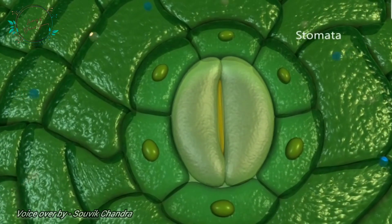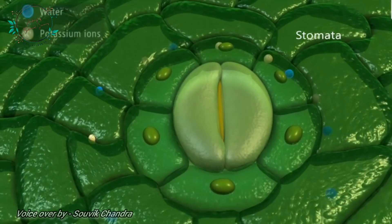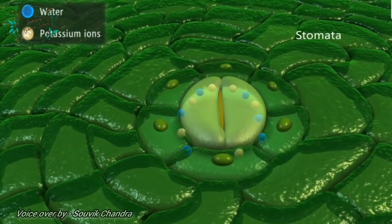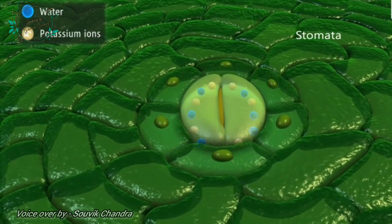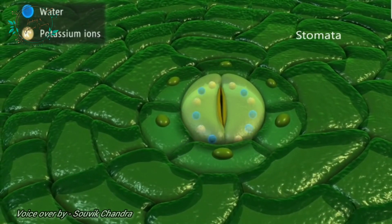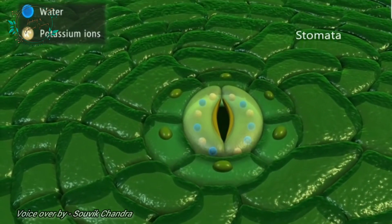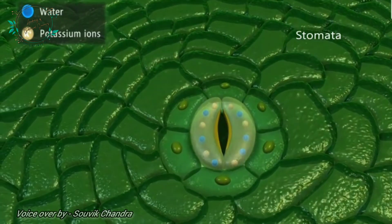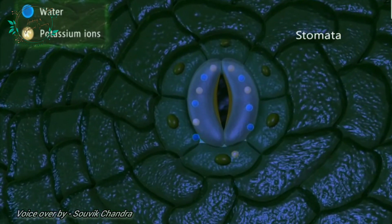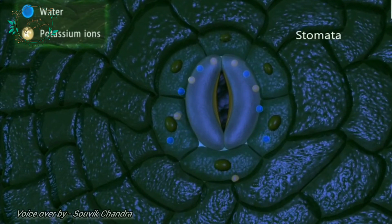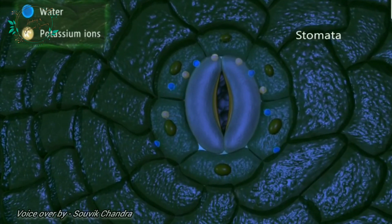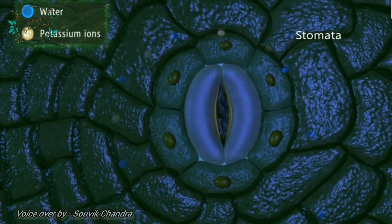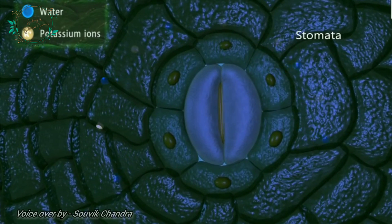This is controlled by the stomatal opening and closing mechanism. During the daytime, water enters into the guard cells along with the potassium ions, bringing about a change in shape of the guard cells and the stomata open. During the night, the potassium ions and water molecules leave the guard cells, thus the turgidity decreases and the stomata close.